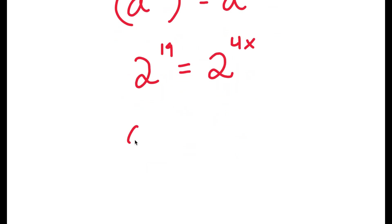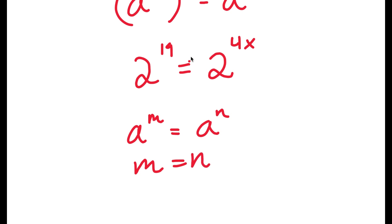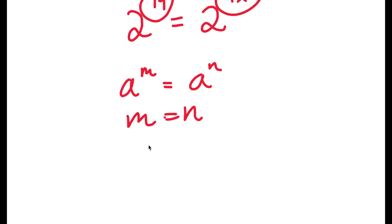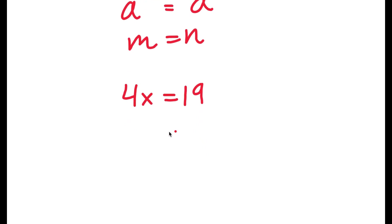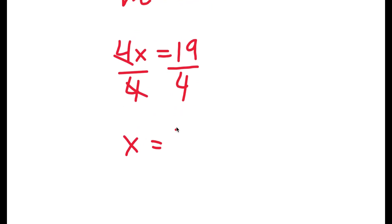Now, if I have something in the form a to the power of m is equal to a to the power of n, this means that m is equal to n. So in this case, 19 is equal to 4x. We have a simple equation here — all I have to do is divide both sides by 4, and I get x is equal to 19 over 4.